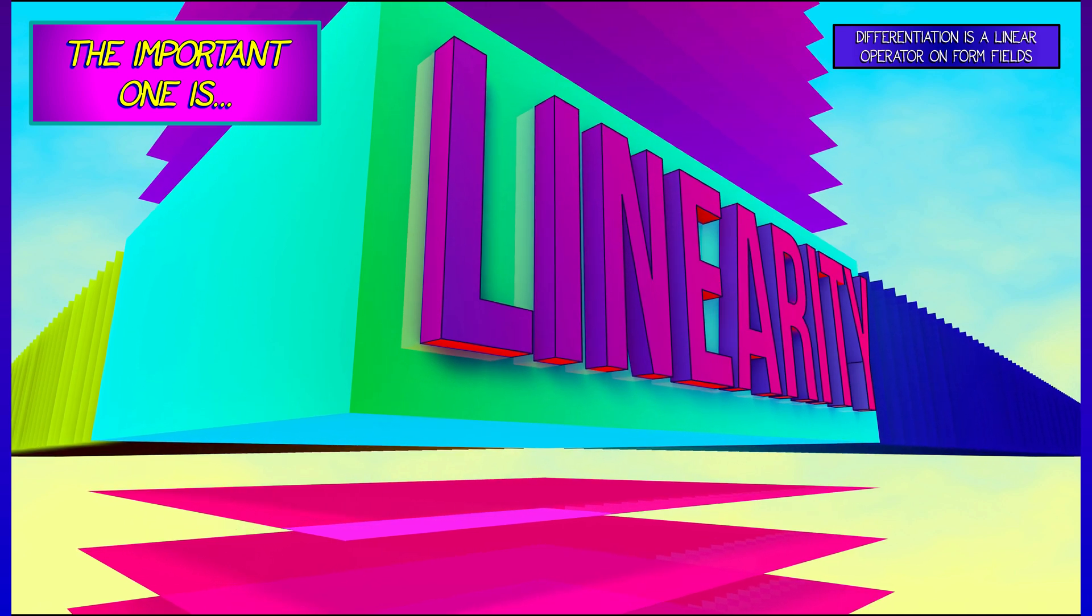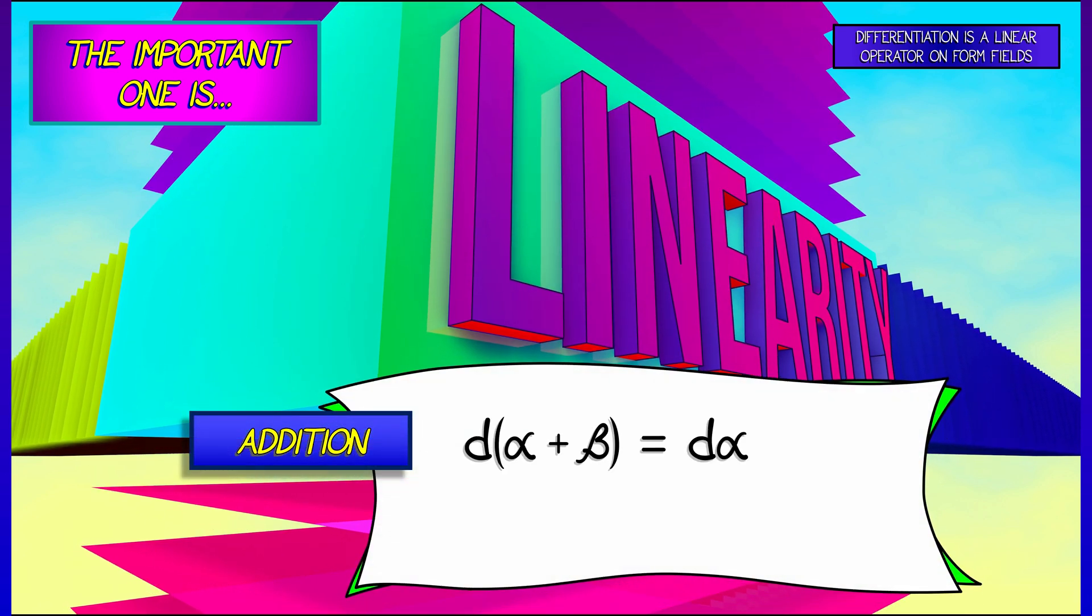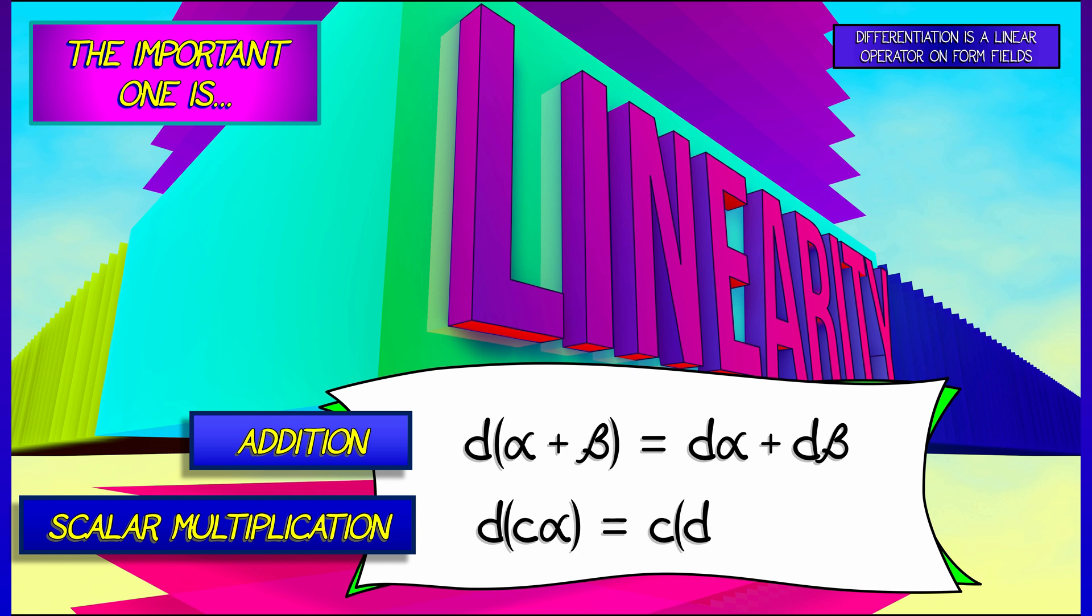That operator is a linear operator on form fields. That means, for example, that the derivative of alpha plus beta is the derivative of alpha plus the derivative of beta. And the derivative of c times alpha is c times d alpha, where c is a scalar, not a scalar field. It's just a constant.